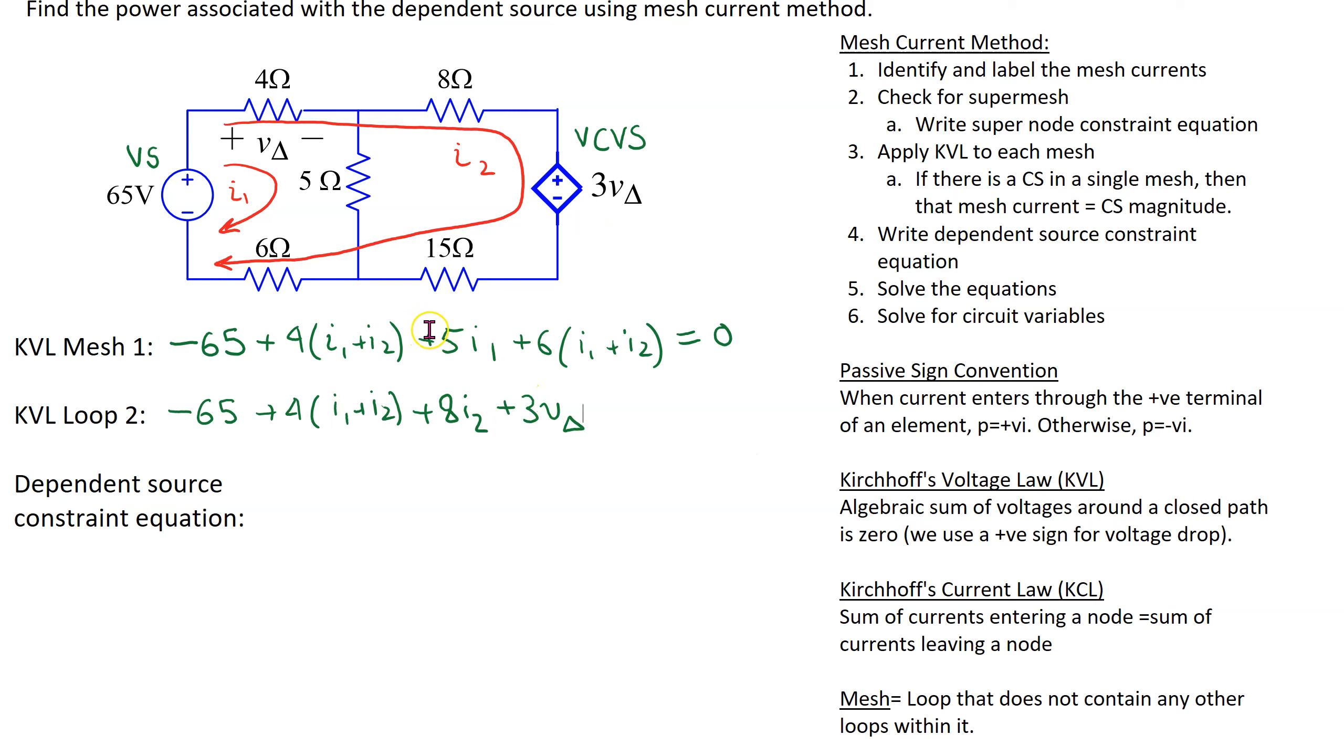Through the 15 ohm resistor the current is only I2. So we get 15 I2. And the last term is the voltage drop across the 6 ohm resistor through which both I1 and I2 are flowing in the same direction. Thus we get this equation.